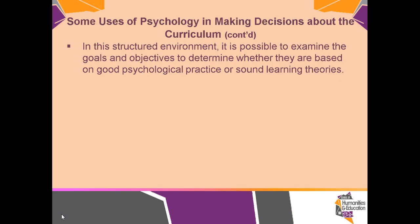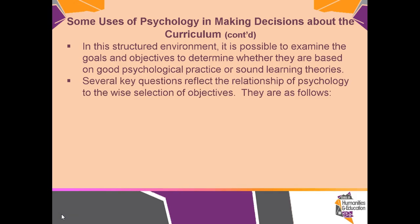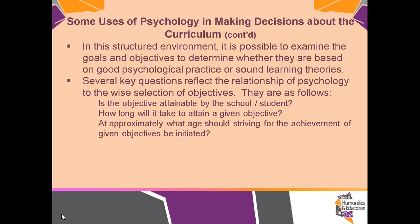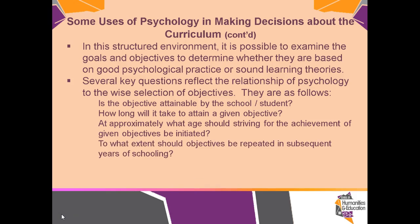In a structured environment, it is possible to examine goals and objectives to determine whether they are based on good psychological practice or sound learning theories — these two things go hand in hand. Several key questions reflect the relationship of psychology to the wise selection of objectives: Is the objective attainable by the school and the student? How long will it take to attain a given objective? At approximately what age should striving for the achievement of given objectives be initiated? To what extent should objectives be repeated in subsequent years of schooling? In what ways are objectives multiple in their effect?